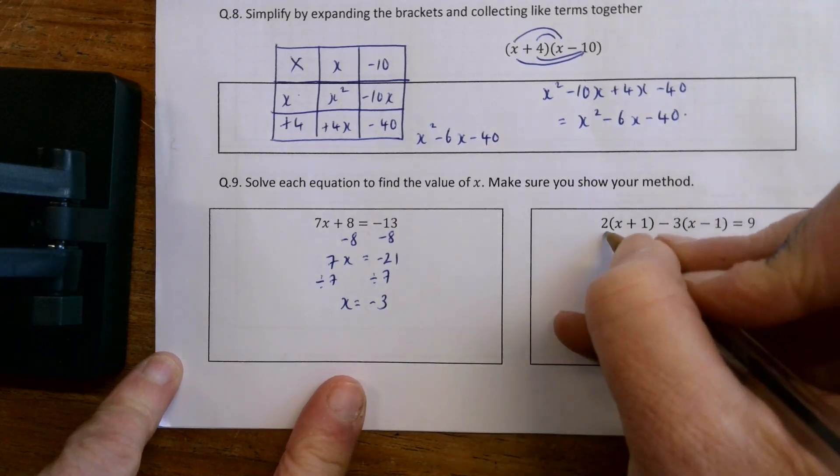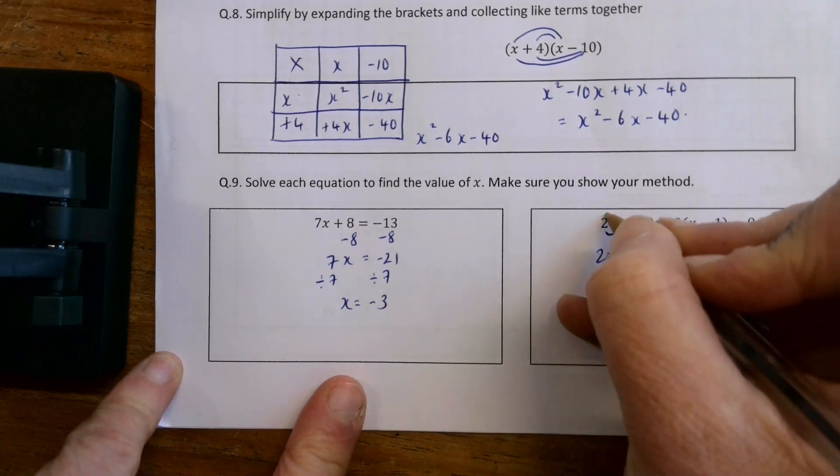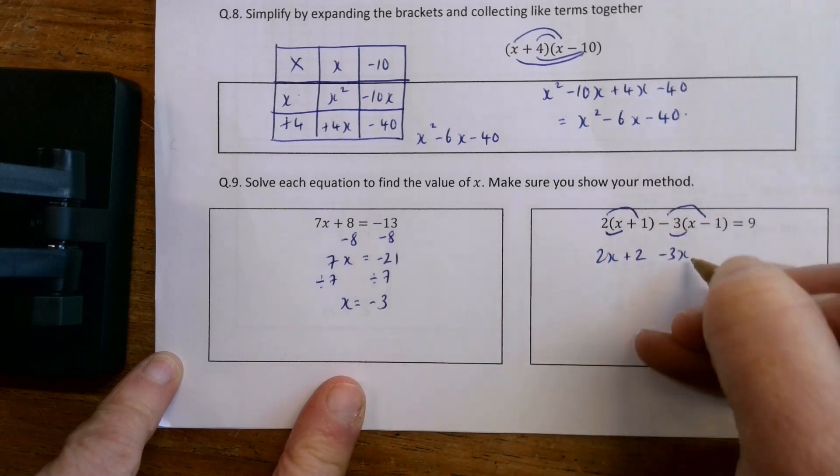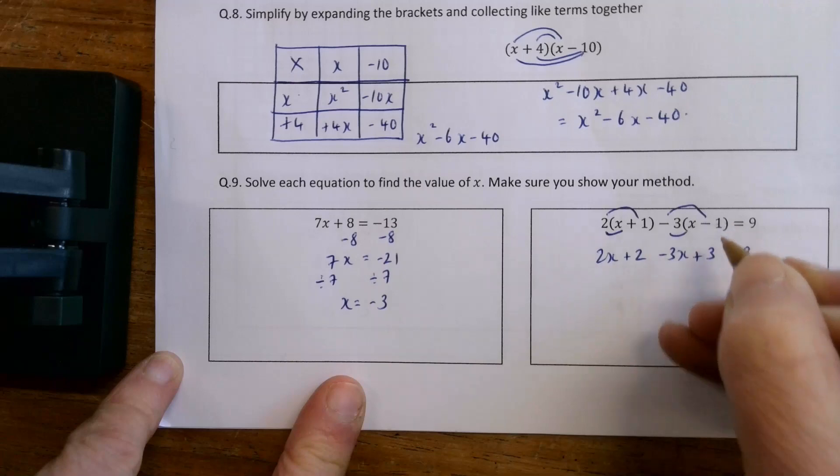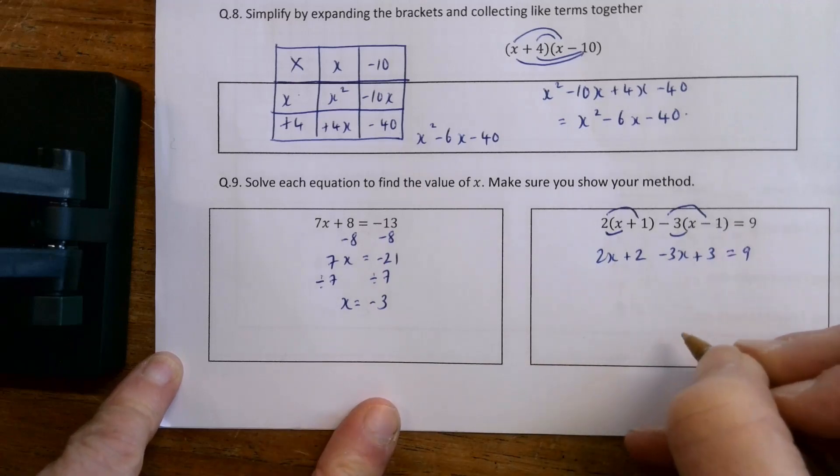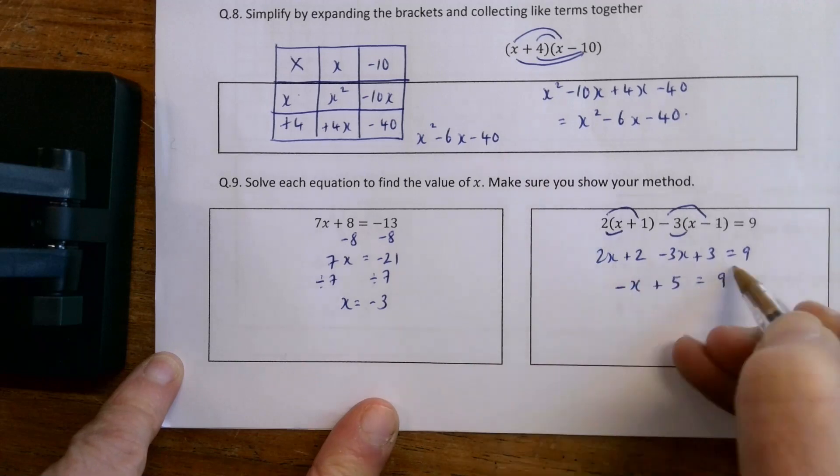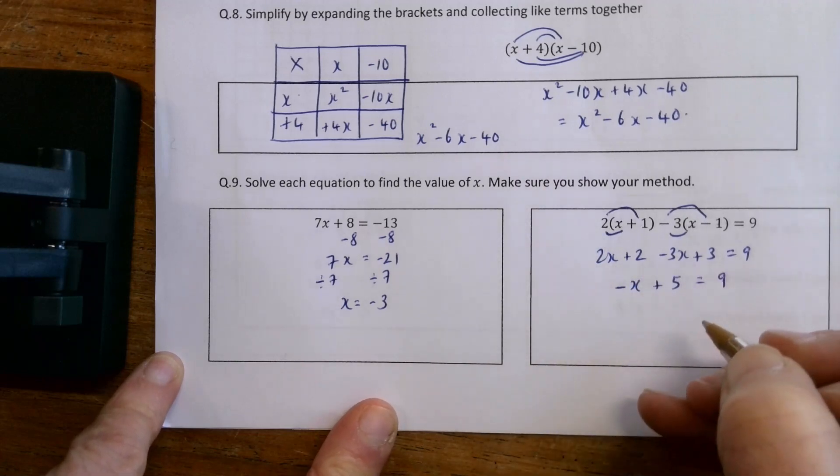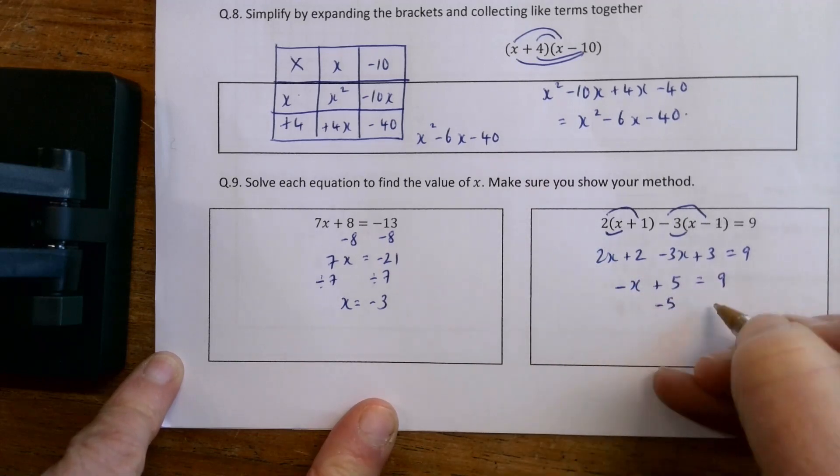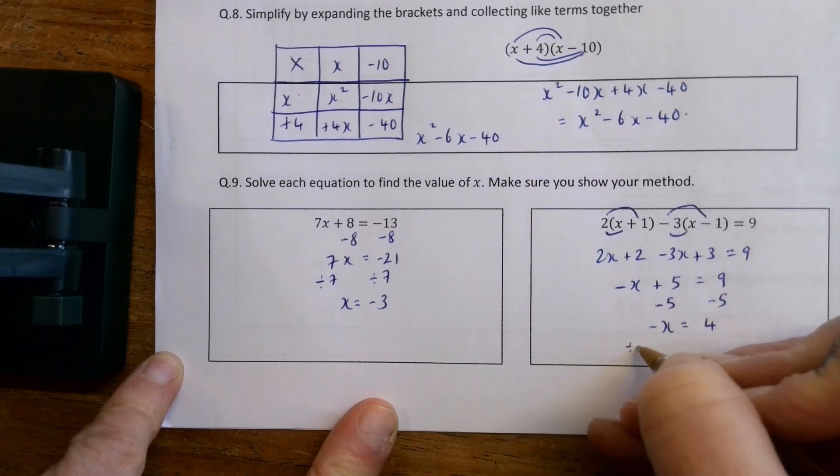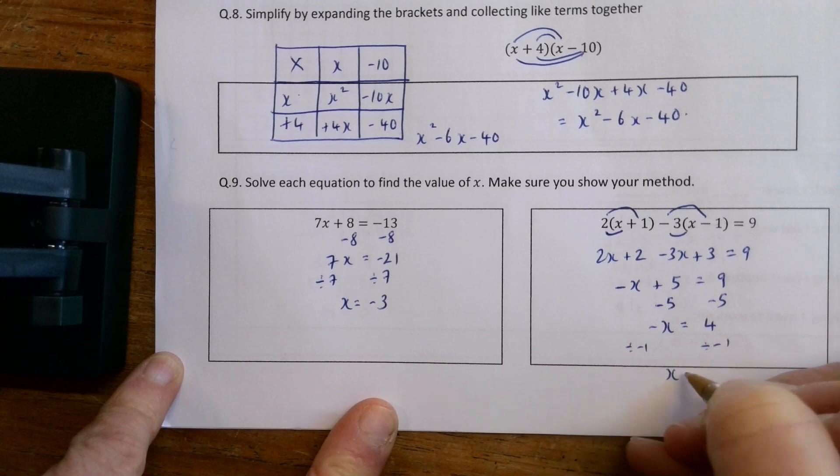2 by x is 2x, 2 by 1 is 2. I have to multiply out these brackets first before I can solve. So just don't forget, minus 3 by minus 1 is plus 3. So I have minus x plus 5 is equal to 9. Do you notice how I put things together first before I try and solve? Because otherwise I have lots of things to move around. So minus x is equal to 4. So divide by minus 1. And x must equal minus 4.